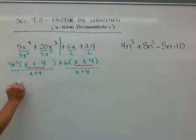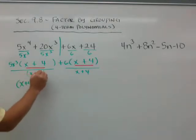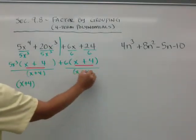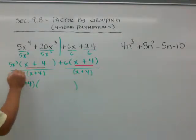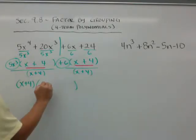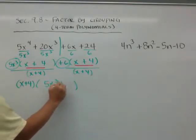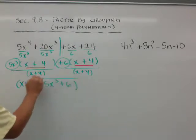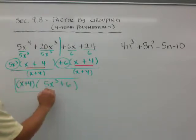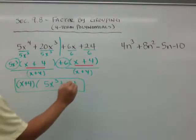So I can pull these two out, and if I pull out the x plus 4, in parentheses — think of it as parentheses — I'm left with 5x cubed plus 6. And you just factored a four term polynomial.